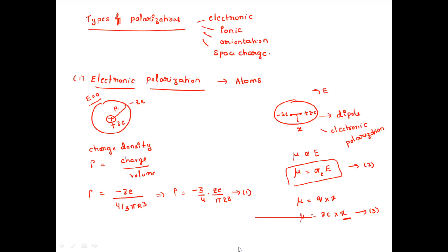Hello students. Today we will see the types of polarizations in dielectric materials. There are four types of polarizations: electronic polarization, ionic polarization, orientational polarization, and space charge polarization. First, we will see what is electronic polarization.